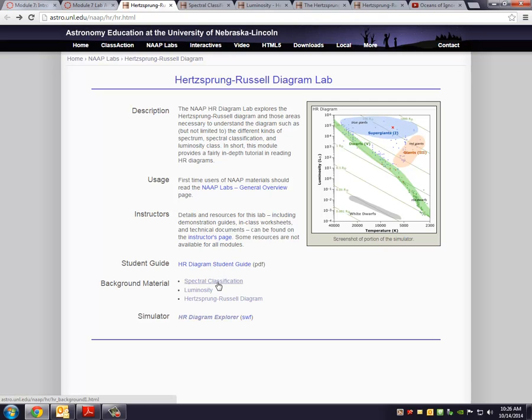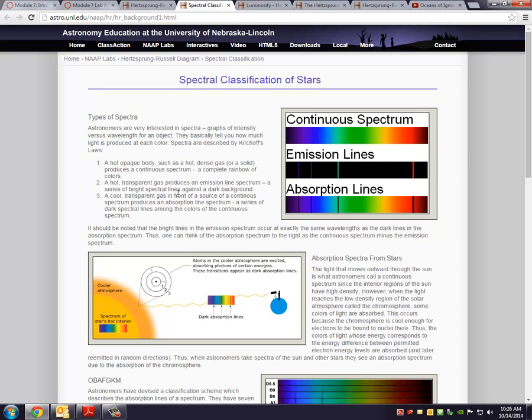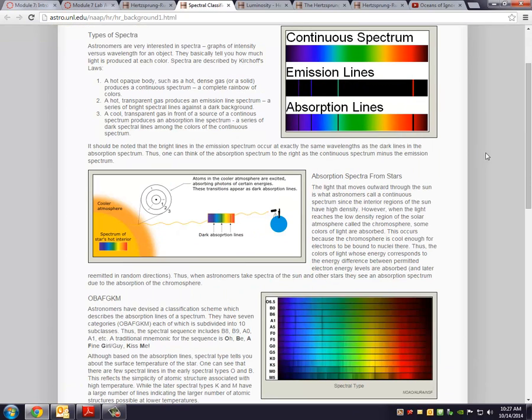The first link is to Spectral Classification. This may have been a little while since we've talked about this. You may have encountered this earlier in the textbook. Stars have different spectral classes. If you remember, there was a mnemonic. I always think of that as only bad astronomers forget generally known mnemonics. O, B, A, F, G, K, M. Those are ways of classifying stars based on their temperature.